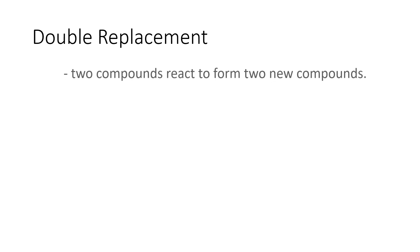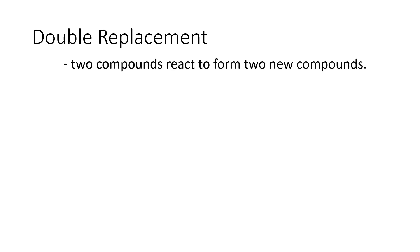Double replacement reaction, or exchange, is a type of chemical reaction where two compounds react to form two new compounds. Let's say compound AB will react with compound CD. This will form two new compounds — the products, compound AD and compound CB.